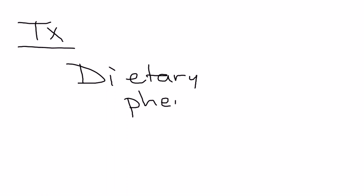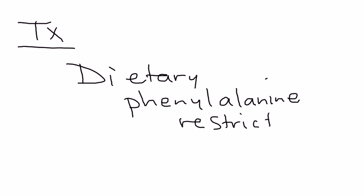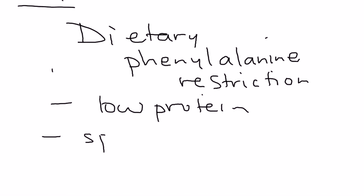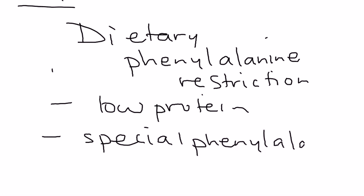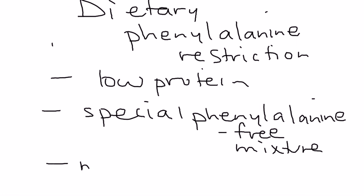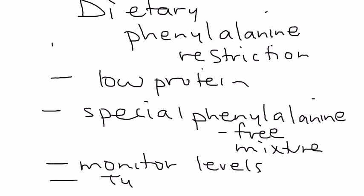Treatment involves dietary management — specifically, dietary phenylalanine restriction. This means a low protein diet. There are also special phenylalanine-free mixtures that PKU patients commonly use as part of their diet. Phenylalanine levels must be continually monitored. Because tyrosine levels are low, tyrosine supplementation is also required.